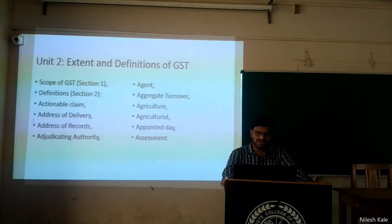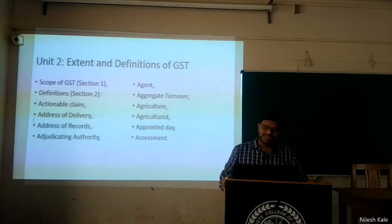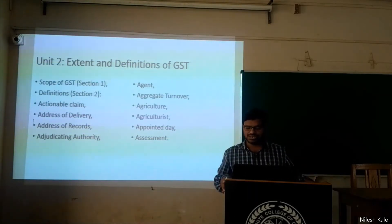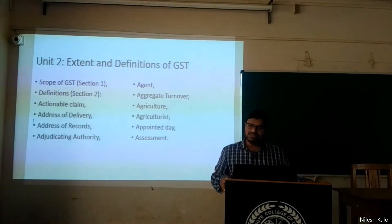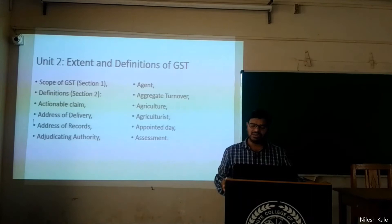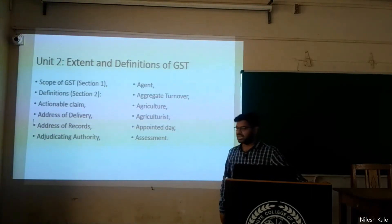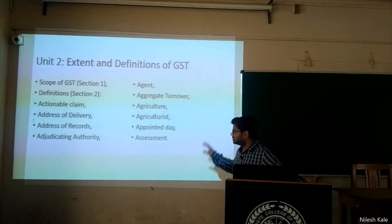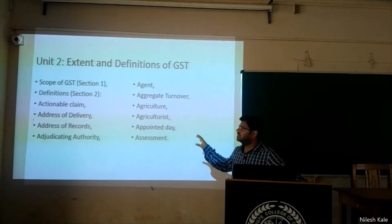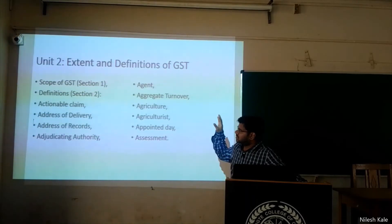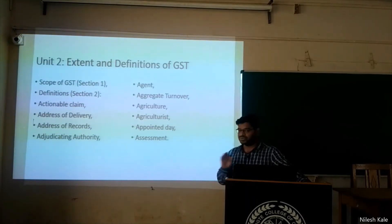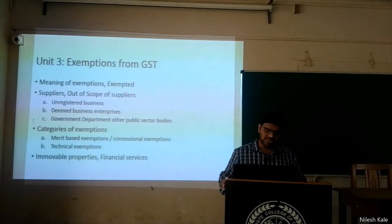The ten definitions are: actionable claim, address of delivery, address of records, adjudicating authority, agent, aggregate turnover, agriculture, agriculturist, appointed day, and assistant. These ten definitions are there in unit two for you to understand GST.